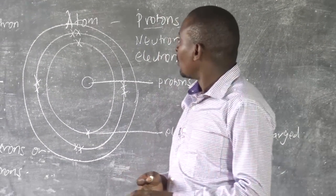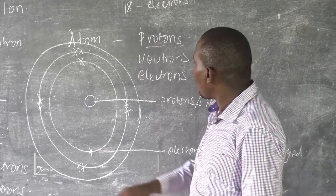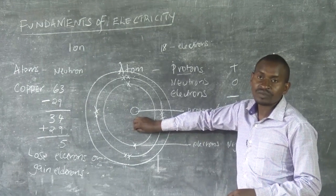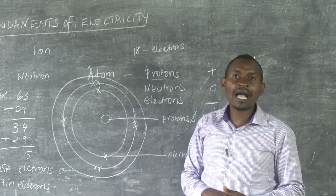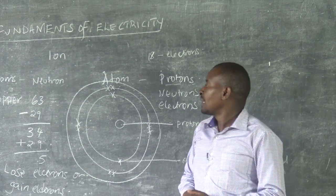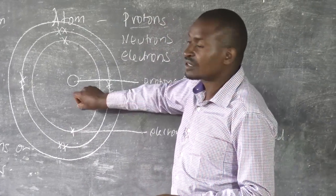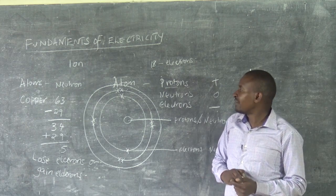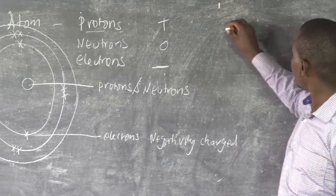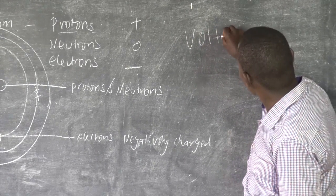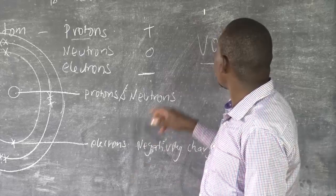What would cause electrons to flow? If a body gains electrons it becomes negatively charged; if another body loses electrons it becomes positively charged. There is then a difference in charge between these two bodies, and that difference in charge is known as voltage.